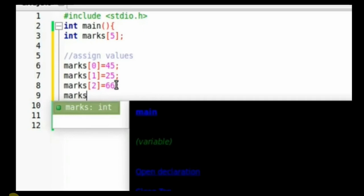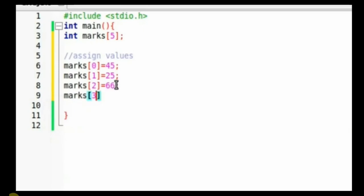Marks subscript 3—remember we're supposed to go all the way to subscript 4 to get the size of 5—so subscript 3 we assign 74, and marks subscript 4, which is the last element, we assign 55. Now again, the same procedure on how we're going to output. We basically just use printf.